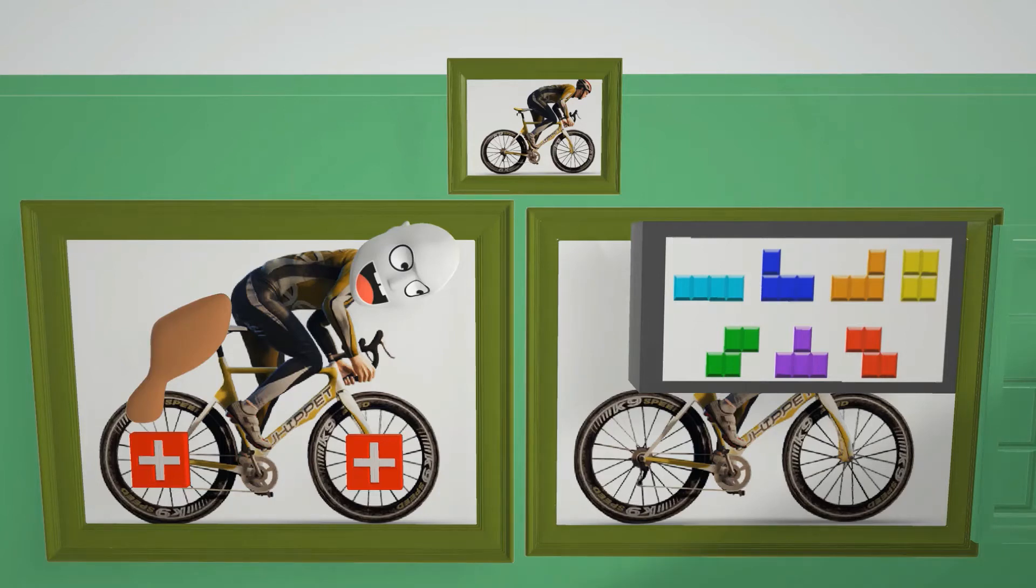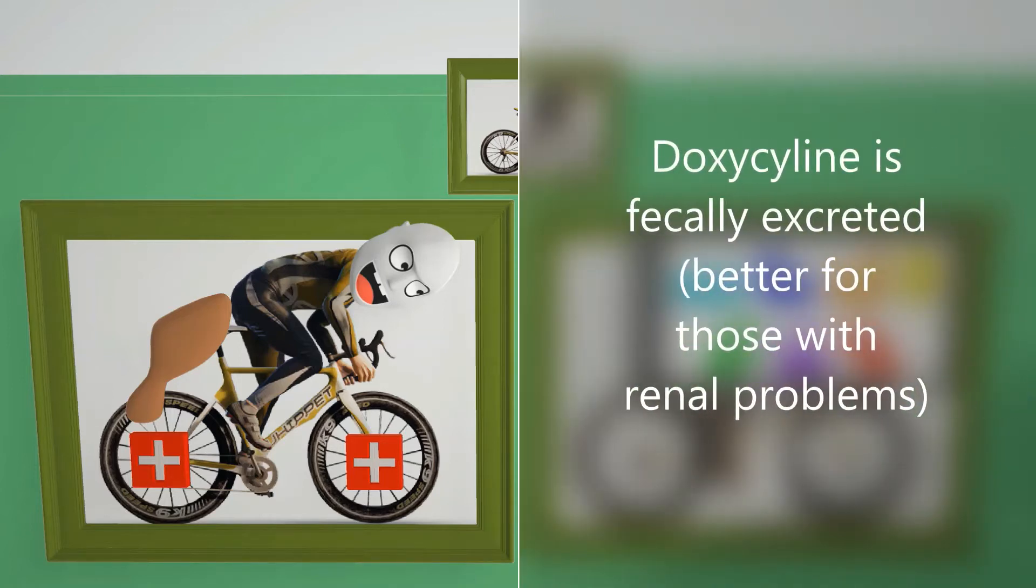While we're here we note that doxycycline is letting out some feces to remind us that it has a fecal route of elimination, not a renal one. That's why doxycycline is used with patients with renal problems.